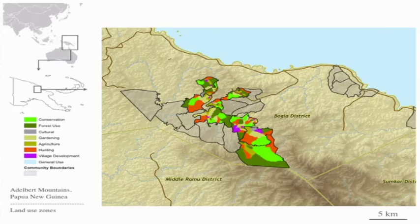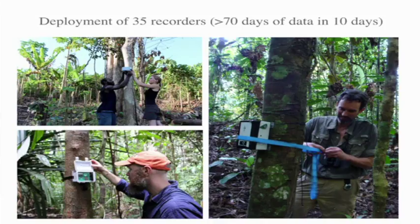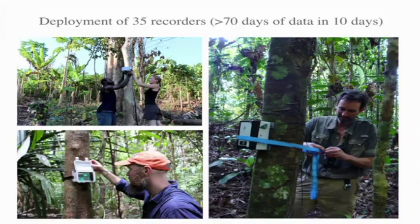Here is a map of the area. Each community is outlined in black, and the different colors are the different land use zones. We went to the furthest three communities — Musia, Munatia, Vera, and Ivarame — and you can see that each community has its own conservation zone, its own hunting zone, and its own gardening zone. With the great help of the local people who took us around their forests, we deployed 35 recorders at 35 different sites and left them recording continuously for usually 48 hours, because we wanted a solid 24-hour block.